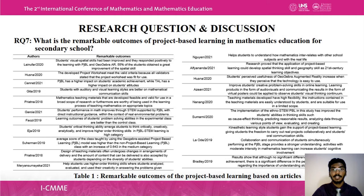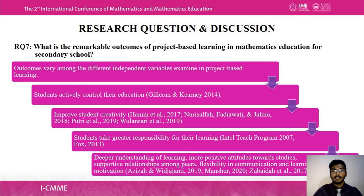The seventh research question concerns the remarkable outcomes of project-based learning in mathematics education for secondary school. The outcomes of 19 articles were summarized. Dillenbourg and Kearney (2014) stated that students actively control their education during project-based learning, and it helps improve student creativity while students take greater responsibility for their learning. Project-based learning also helps students achieve deeper understanding, more positive attitudes towards school, supportive peer relationships, flexible communication, and learning motivation.